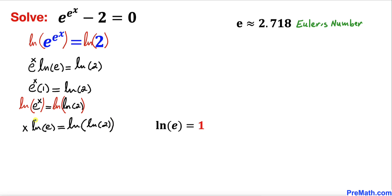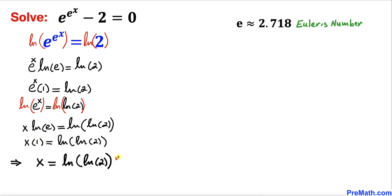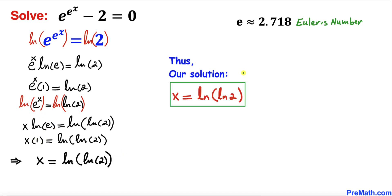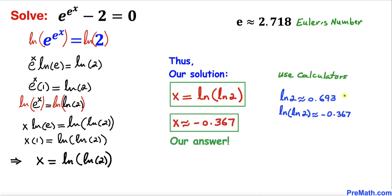Once again, natural log of e equals 1. So replacing natural log of e by 1, here's our x value: our solution turns out to be x equals natural log of natural log of 2. Using a calculator, our x value is approximately equal to negative 0.367.